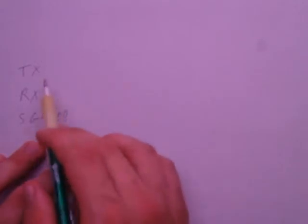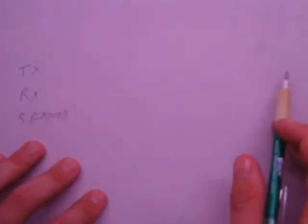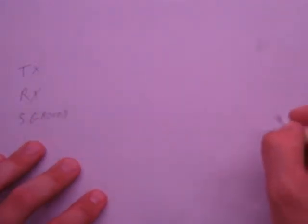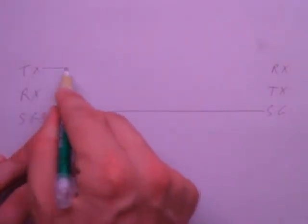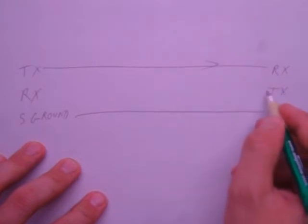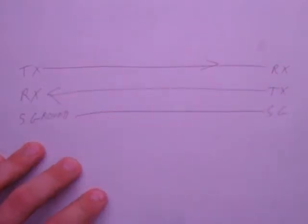For most devices though, you obviously have to have the transmit from one device going to the receive of another. So whatever your other device is, you've got your RX, TX, and signal ground. I'll just call it SG in this case. So signal ground just goes to signal ground. Transmit goes to the receive, and transmit on this side goes to the receive on that side.